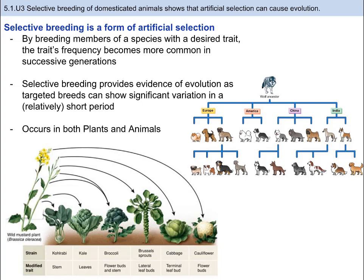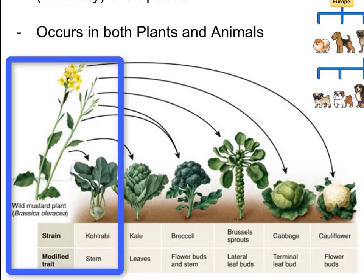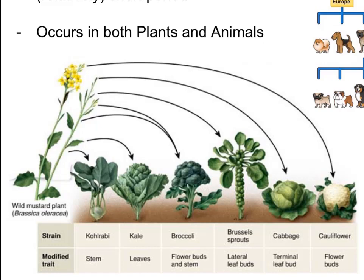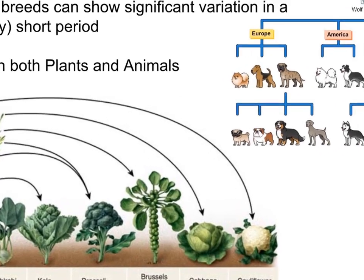Humans have selected desired traits of plants and animals for a very long time. For example, the wild mustard plant at the bottom is the original species — the OG. Some groups of humans saw plants that had good-looking stems and continued to choose plants with better stems. Over time, the stems became so distinguished we know it now as kohlrabi. And you can see all of the different vegetables that came from the selective breeding of wild mustard.